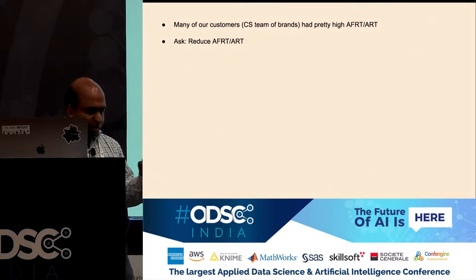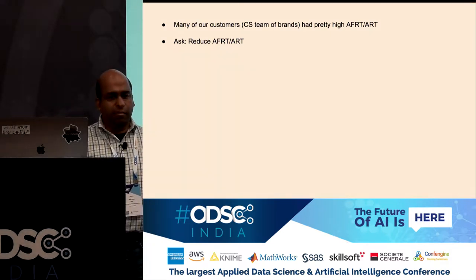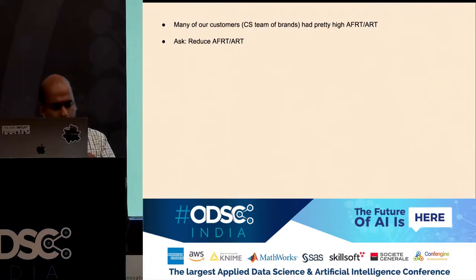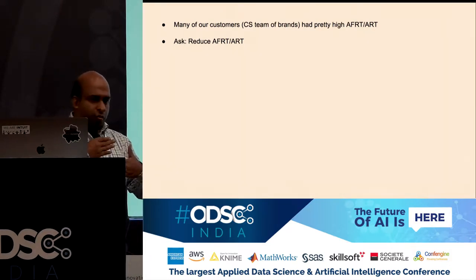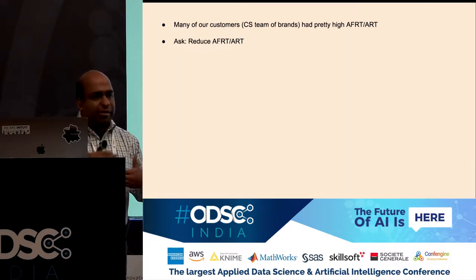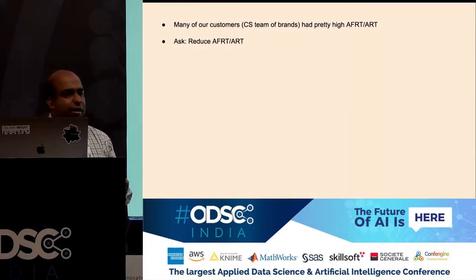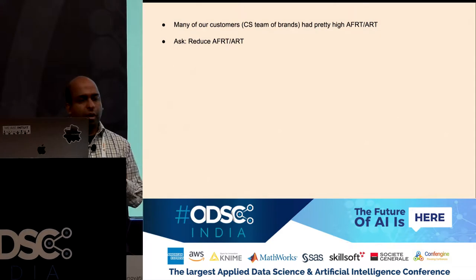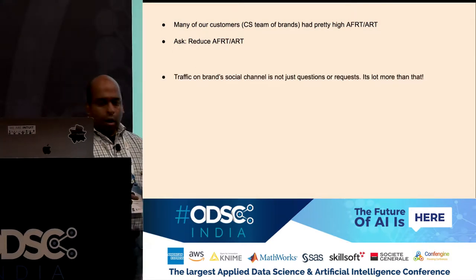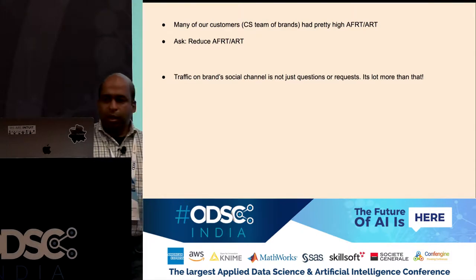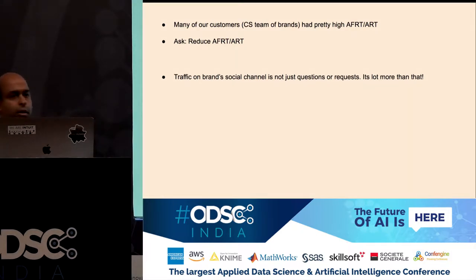We started by following our users — customer support teams sitting on our platform engaging with customers. We went physically to their sites, shadowed them, watched what they did, how they used the tool, and what processes they followed. We also used remote screen monitoring to understand what exactly was leading to such high response times. One of the first things we noticed was that the kind of traffic coming to these channels was not just questions or requests — a lot more things come in.